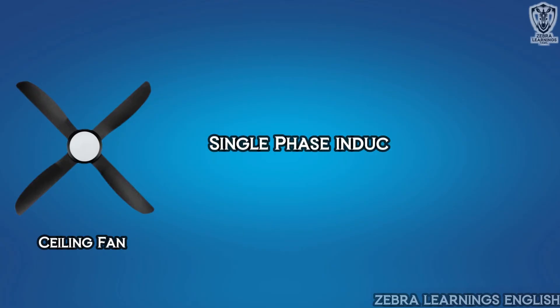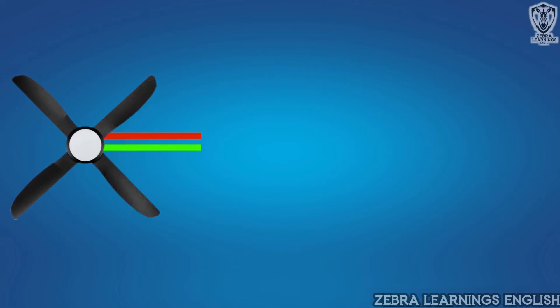Single phase induction motor is used in ceiling fan. This motor has two coils. One of them is starting coil, and the other is running coil. One terminal is taken from these two coils, and it is connected inside the motor, and given as common terminal.